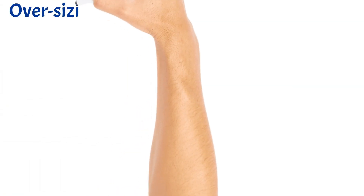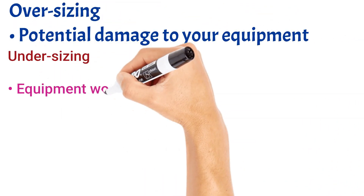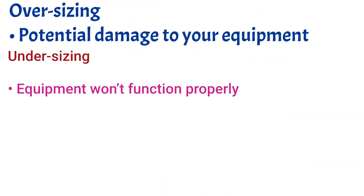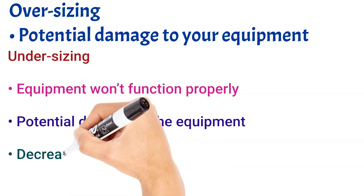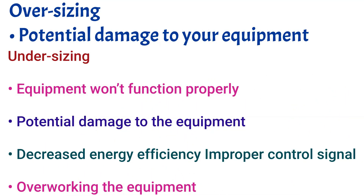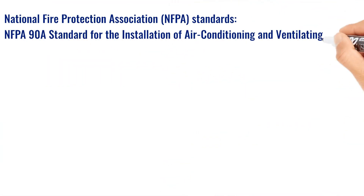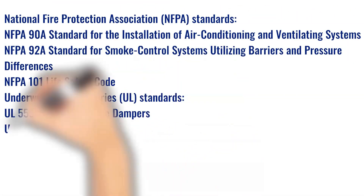When oversizing of the actuator, it will potentially damage your equipment. When undersizing of the actuator: equipment won't function properly, potential damage to the equipment, decreased energy efficiency, improper control signal, and overworking the equipment. Refer to the following standards for information related to damper actuators.